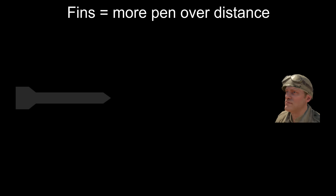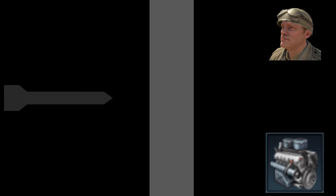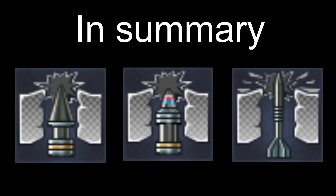The APFSDS shell is essentially an APDS round that is longer and has fins at the back of it. Just like APDS, the shell discards its sabot after it leaves the barrel. The fins improve the shell's performance over long distances. Since the shell is much longer than the APDS, it creates a lot more shrapnel and post-penetration effects. In summary: small armor-piercing shell with a casing around it; APCR shell that gets rid of the casing after it leaves the barrel; and a longer APDS round with fins.